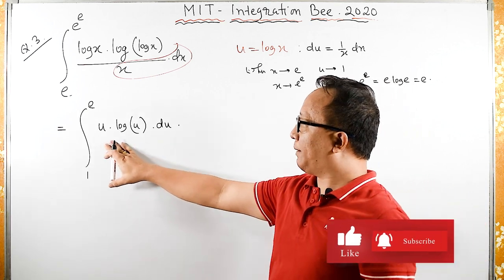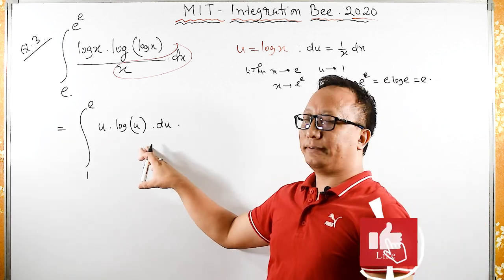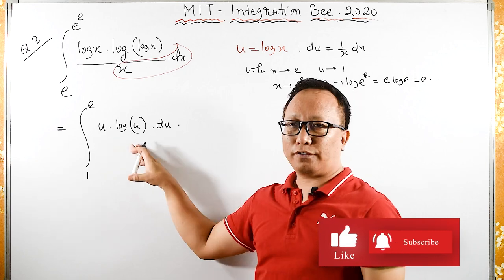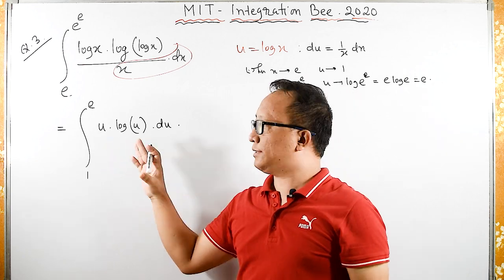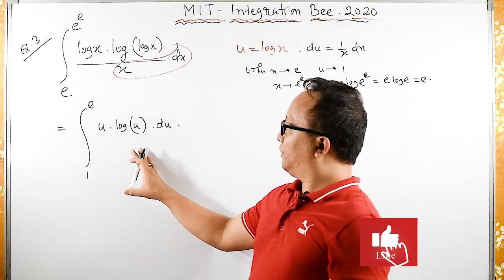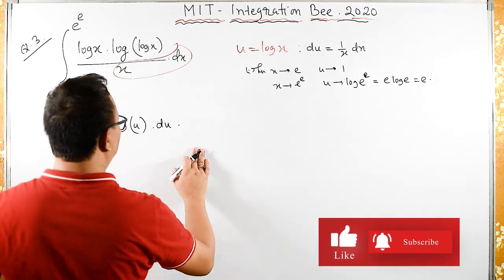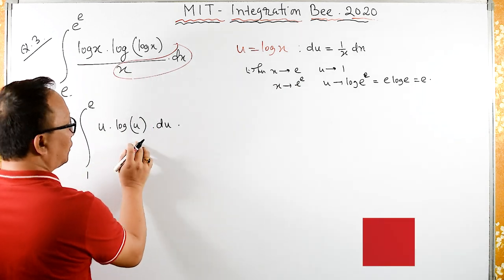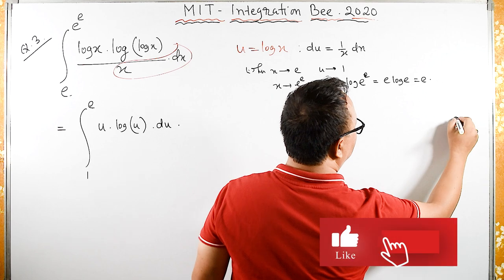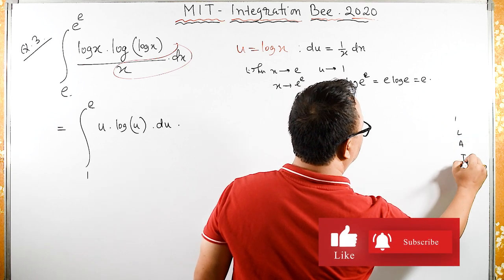Now we can use integration by parts - ILATE rule, tabular form, or DI methods. I will use integration by parts with the ILATE rule.